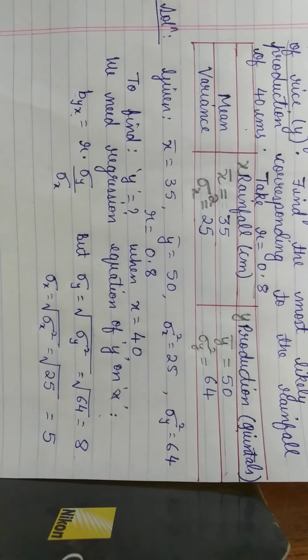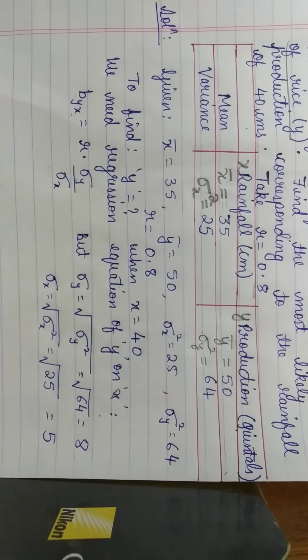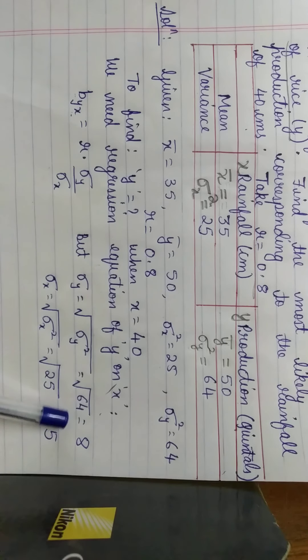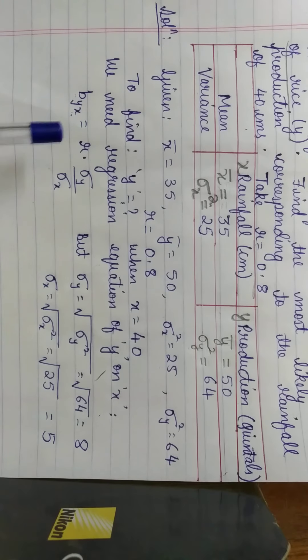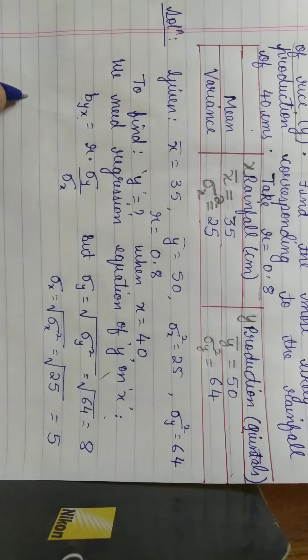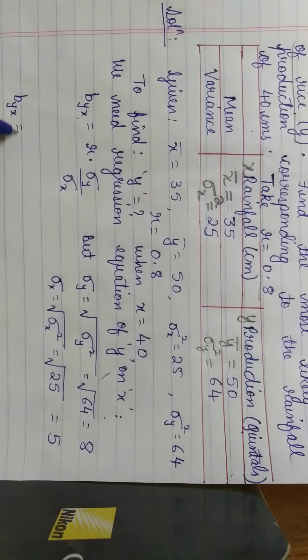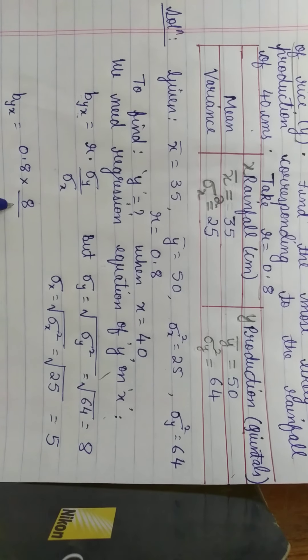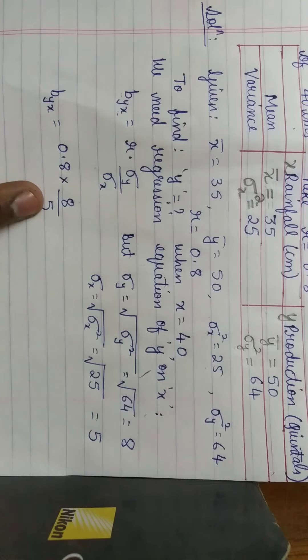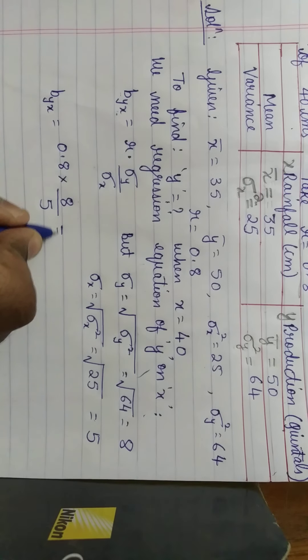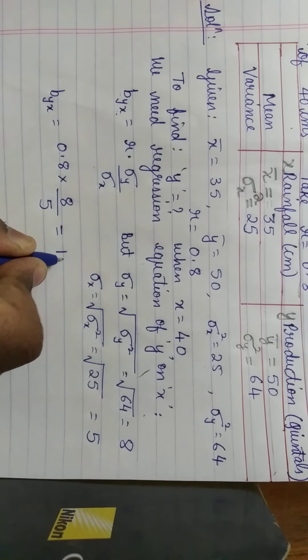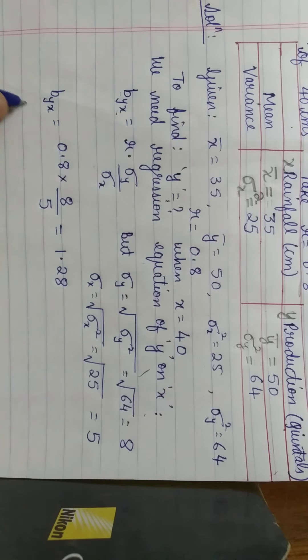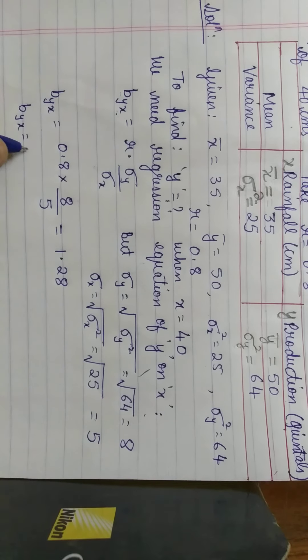They had not given us directly the values of σy and σx — that is, standard deviation of x and y — but instead gave us variance. So first we found σy = 8 and σx = 5. Now substituting in the formula: b_yx = 0.8 × (8/5) = 1.28. So b_yx = 1.28.